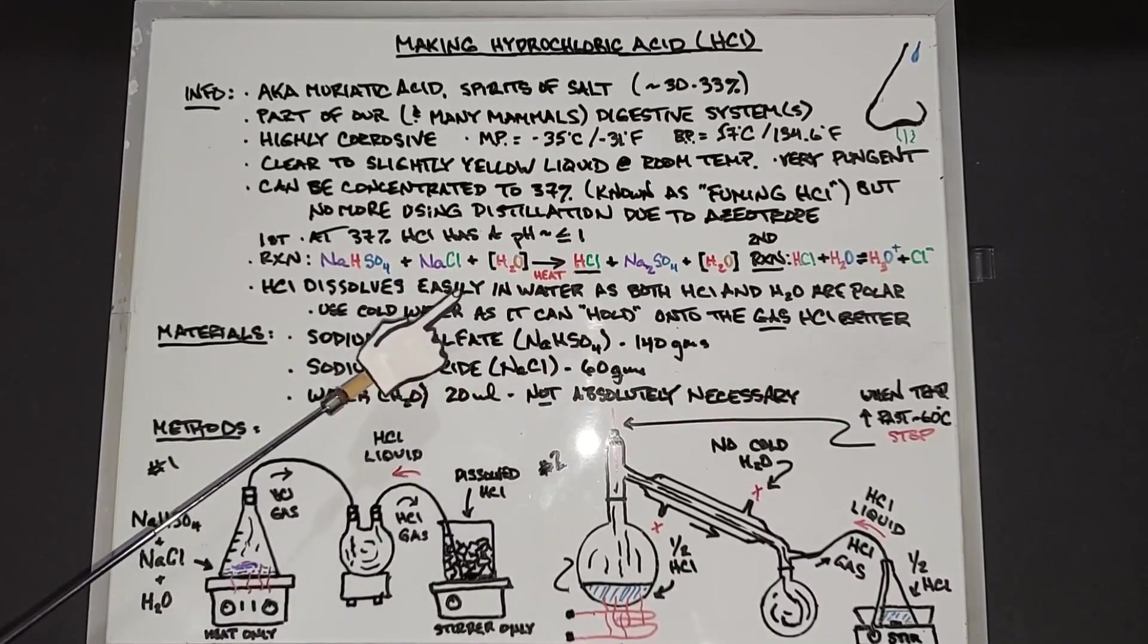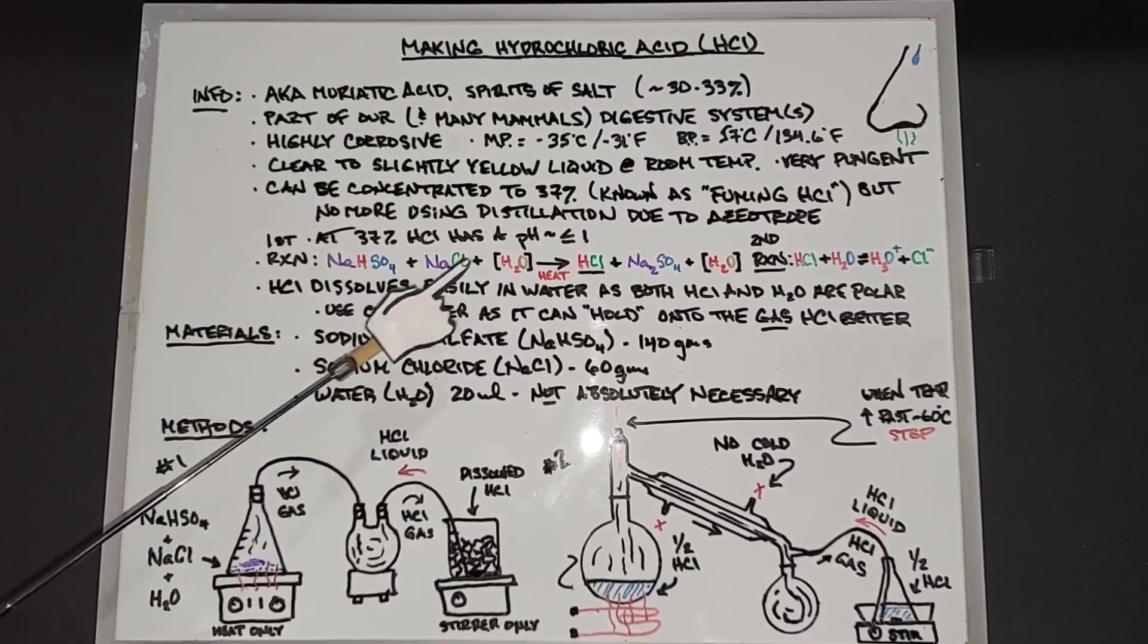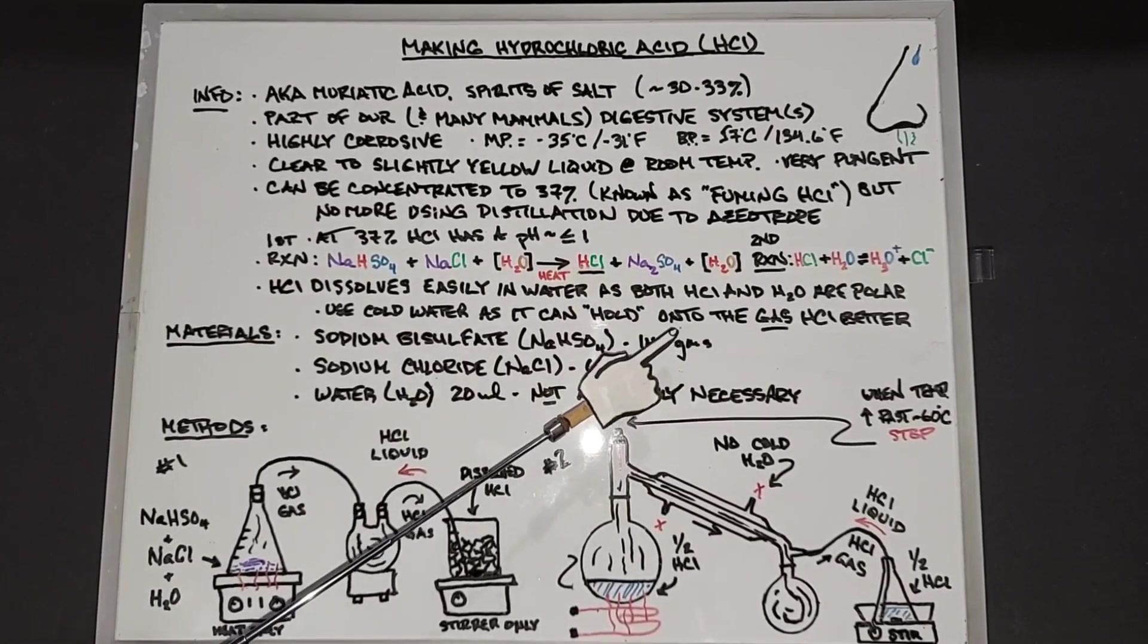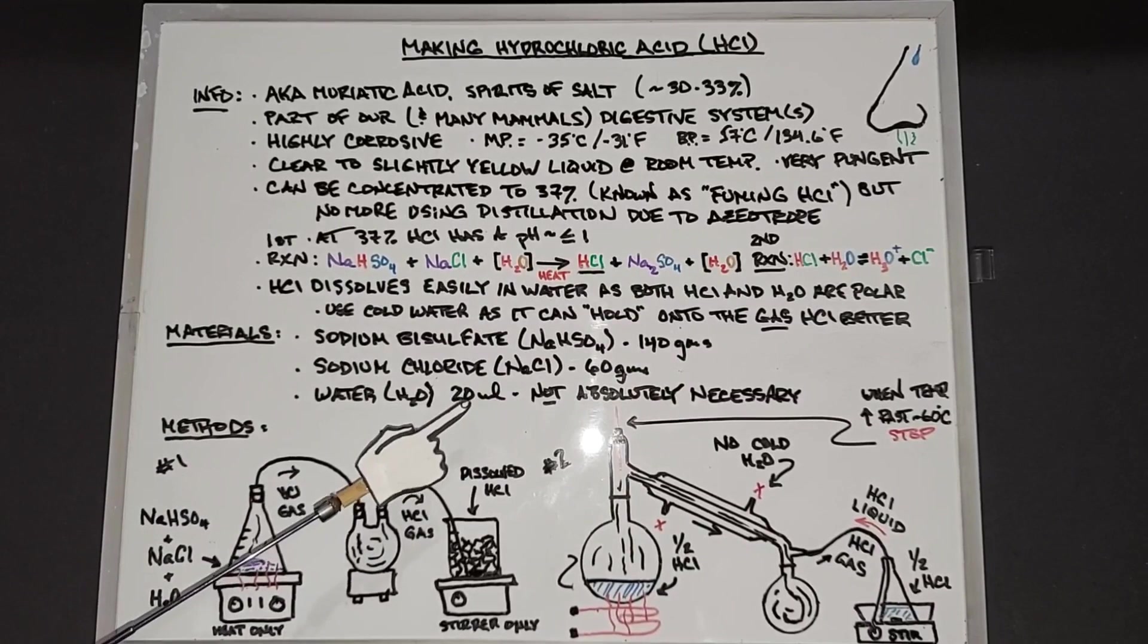Materials we need, which are part of this first reaction here, are sodium bisulfate 140 grams, sodium chloride salt 60 grams, water 20 milliliters. It's not absolutely necessary but it does help the reaction start.